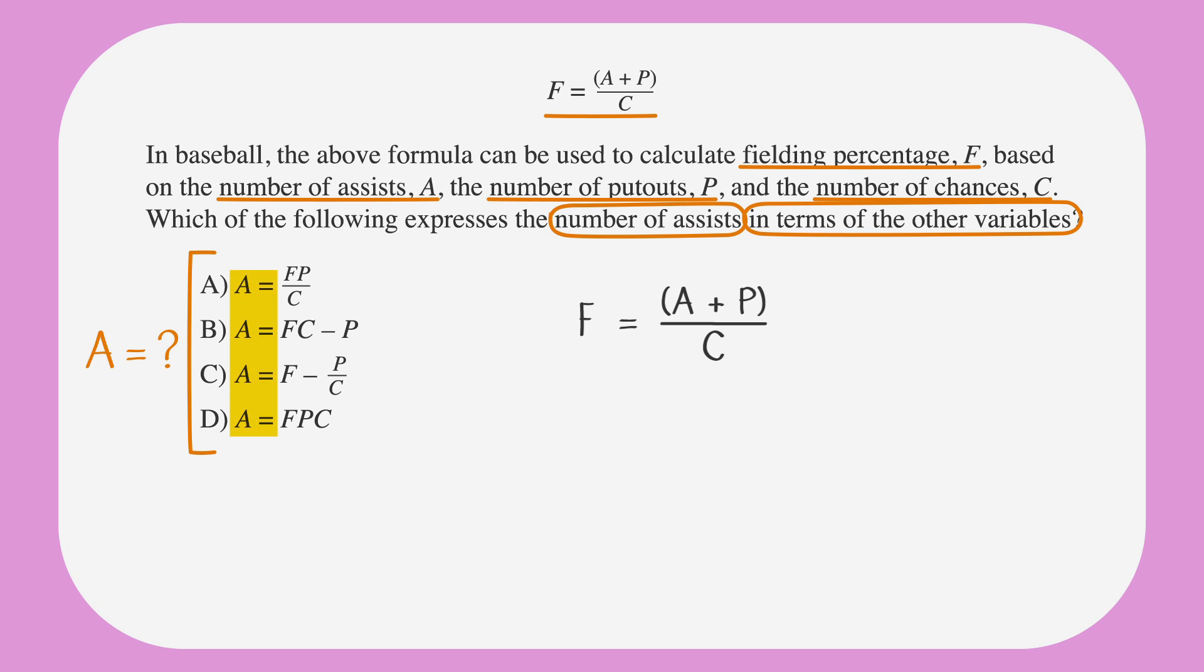But as we can see from the answer choices, we want our expression to begin with A equals. So let's see what we can do to get A by itself. First, we can multiply both sides by C to move the C over to the other side, so we get FC equals A plus P. Now we just need to subtract P from both sides, and we get FC minus P equals A. Flip that around and we're looking at answer choice B.